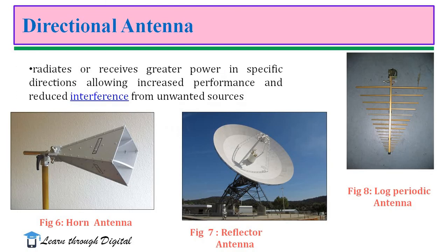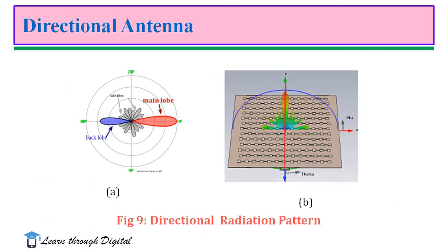The next type is the directional antenna. An antenna with the property of radiating or receiving electromagnetic waves more effectively in some directions than others is called a directional antenna. When an antenna has maximum directivity greater than that of a half-wave dipole, it is known as a directional antenna. Practically, any antenna which radiates more in a particular direction and less in other directions is called a directional antenna, and the radiation pattern is called a directional radiation pattern.